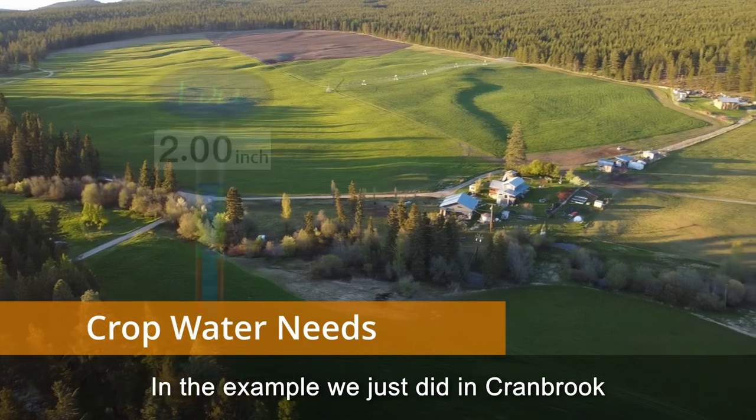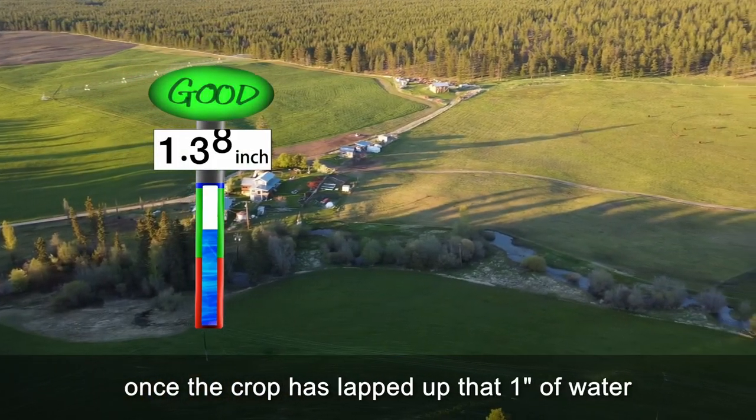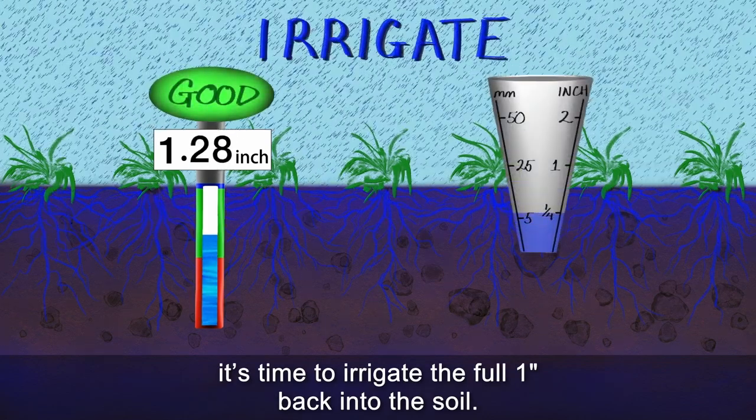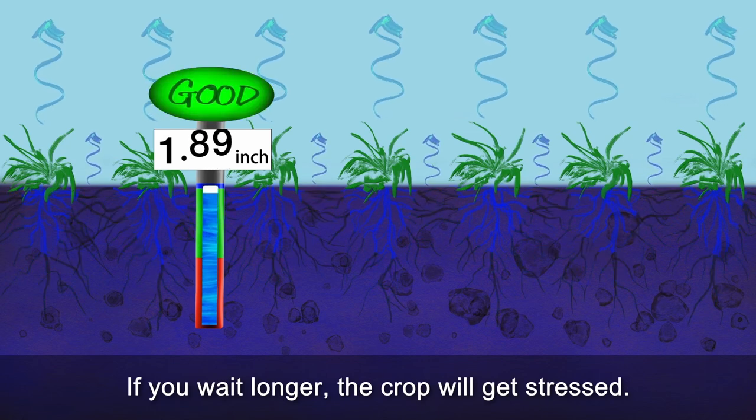In the example we just did in Cranbrook, once the crop has lapped up that one inch of water, it's time to irrigate the full inch back into the soil. If you wait longer, the crop will get stressed.